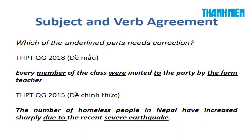Câu hỏi đầu tiên trong đề mẫu của Trung học phổ thông quốc gia 2018: các bạn hãy tìm cái phần gạch dưới nào cần phải sửa lại để cho đúng. Và một câu thứ hai trong đề Trung học phổ thông quốc gia 2015, đây là đề chính thức: 'The number of homeless people in Nepal have increased sharply due to the recent severe earthquake.' Các bạn dừng lại một phút để làm thử cái hai câu này.